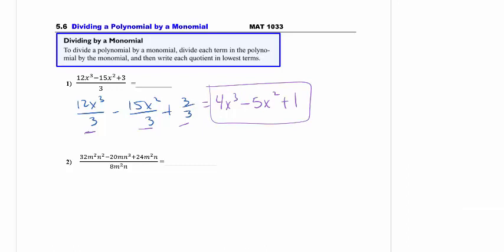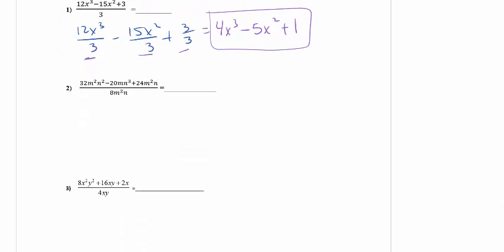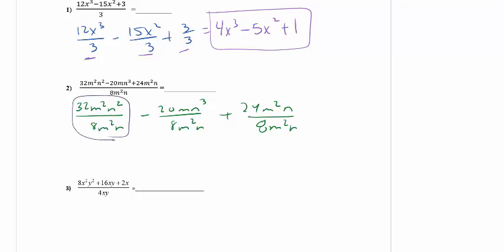Going to number 2, notice I have multiple variables involved, but I'm still going to approach it the same way. I'm going to break it up as I would copy it down from MyMathLab into three separate terms, because the 8m squared n divides into all three terms in the numerator. This is where you have to be careful and look at each piece separately. So here, 32 divided by 8 gives me a 4. The m's completely cancel and then there's an extra n on the top.